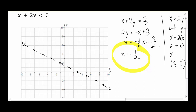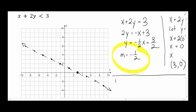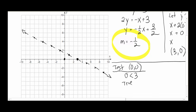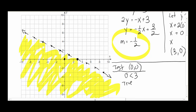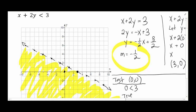Now for the shading on example four. The origin is not on this line, so we test (0, 0): plugging in gives 0 is less than 3 — true. So we shade the side that includes the origin. That's the solution to x plus 2y less than 3.